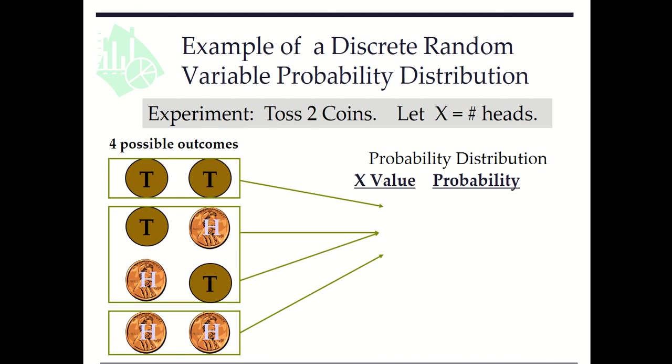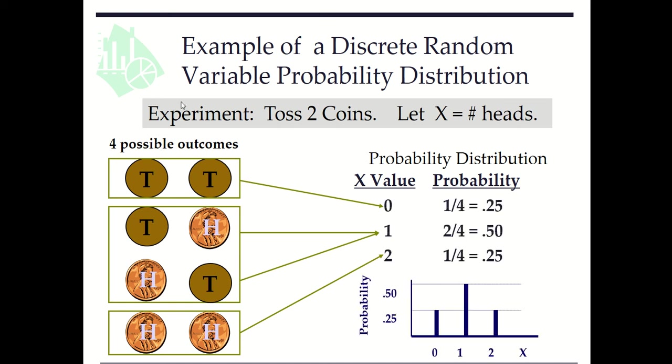Here we consider an experiment where we toss two coins. Let x be the number of heads. So here x can be 0, 1, or 2 with probabilities 1 out of 4, 2 out of 4, and 1 out of 4, and we can use a vertical bar chart to represent the probability of each outcome.